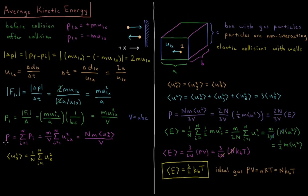If we sum this over all particles, the total pressure equals the sum over all particles of Pᵢ. Since they all have the same mass M and collide in the same volume V, we factor out M/V, leaving the sum from i=1 to N of Uᵢₓ². This gives total pressure equal to (NM/V) times the expectation value of the velocity squared — the average value of Uₓ² for a given particle.